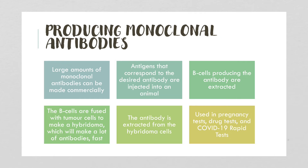Monoclonal antibodies are produced commercially. The antigen corresponding to the desired antibody is injected into an animal. B cells producing the antibody are extracted and fused with a tumor cell to produce a hybridoma, which makes large quantities of antibodies very quickly. The antibody is then extracted and can be used in pregnancy tests to detect the HCG hormone, in drug tests, and in COVID-19 rapid antigen tests to detect the spike protein.